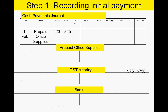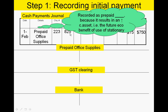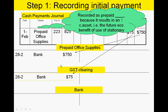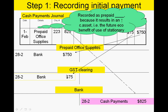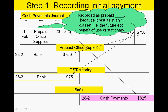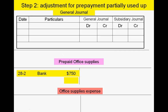Any time we pay for an item in advance we're creating a current asset and must record it as such. We record prepaid office supplies as $750 in the sundries column and $75 in the GST column, totalling a cheque of $825. The $750 goes in the asset account as the value at 1st February, there's a decrease in GST liability, and the total reduces our bank balance from the payments journal.